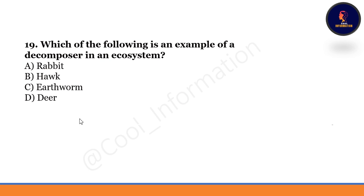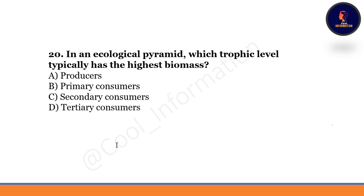Which of the following is an example of decomposers in an ecosystem? Options: rabbit, hawk, earthworms, or deer. Option C is correct — earthworm is an example of decomposers in an ecosystem.